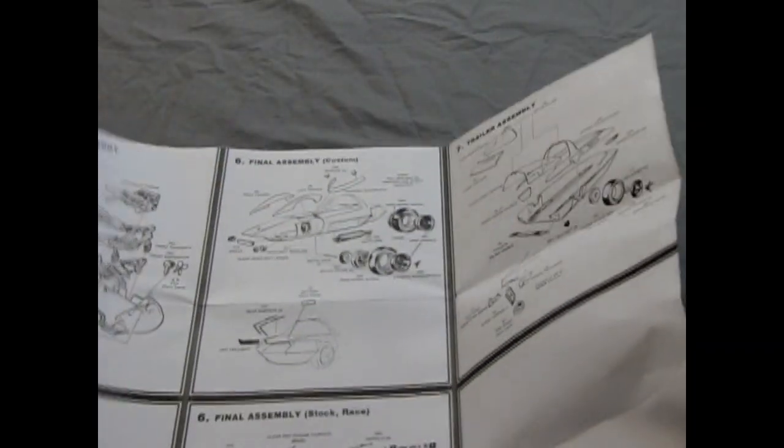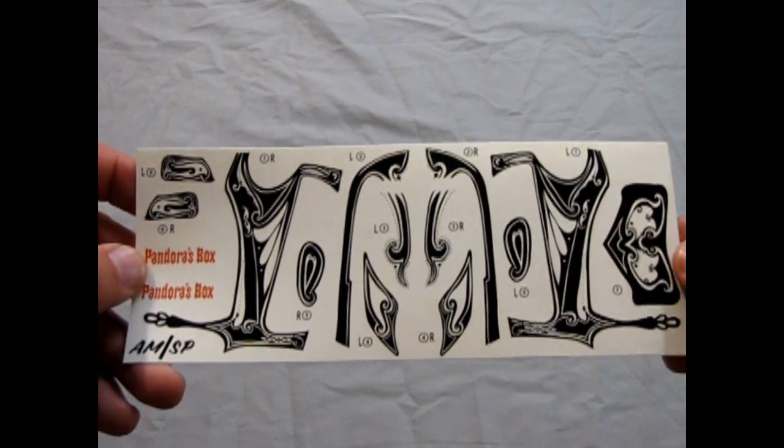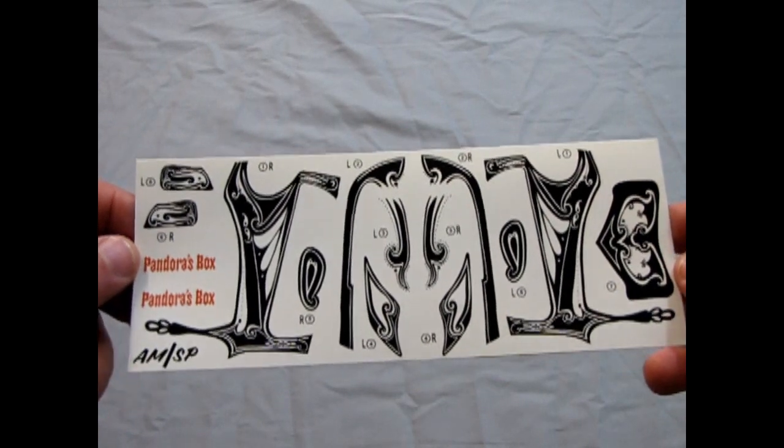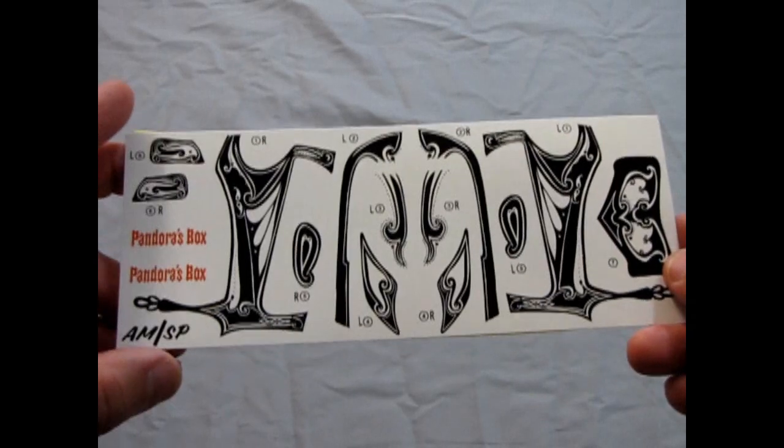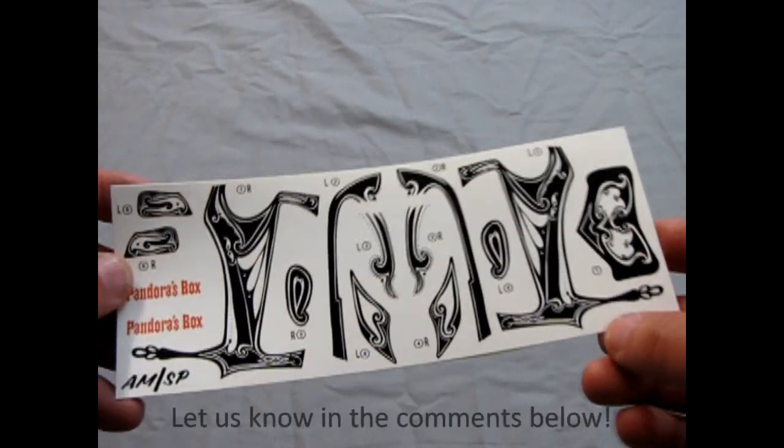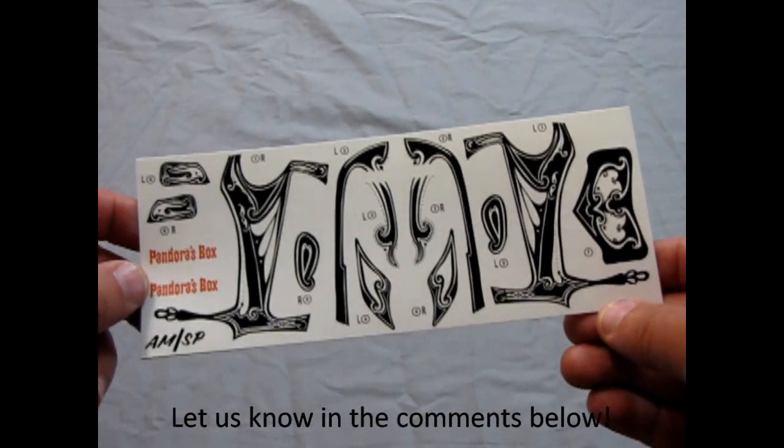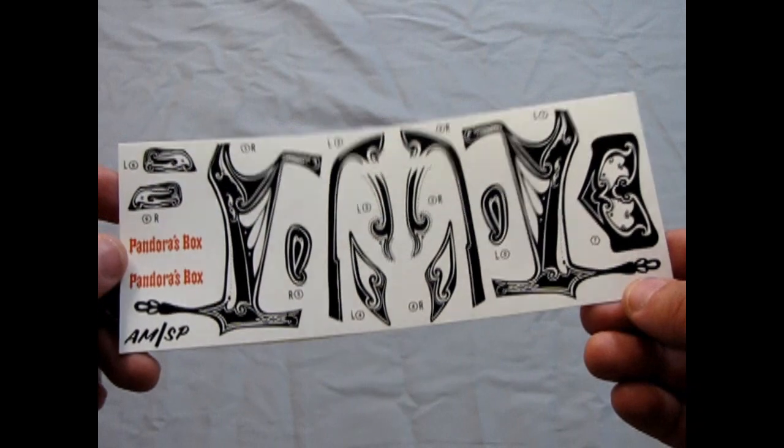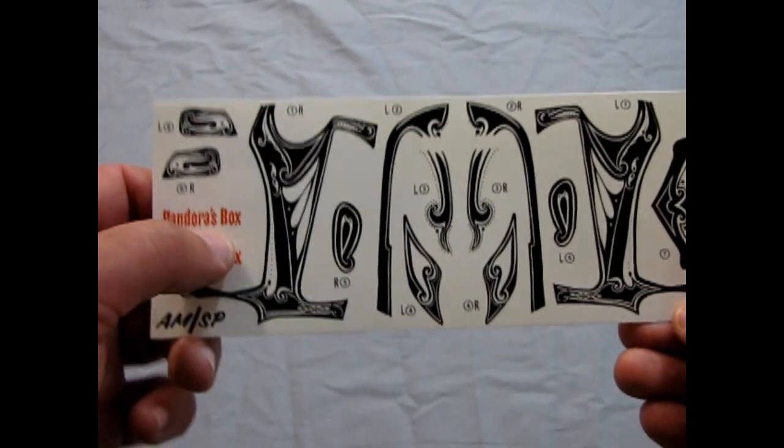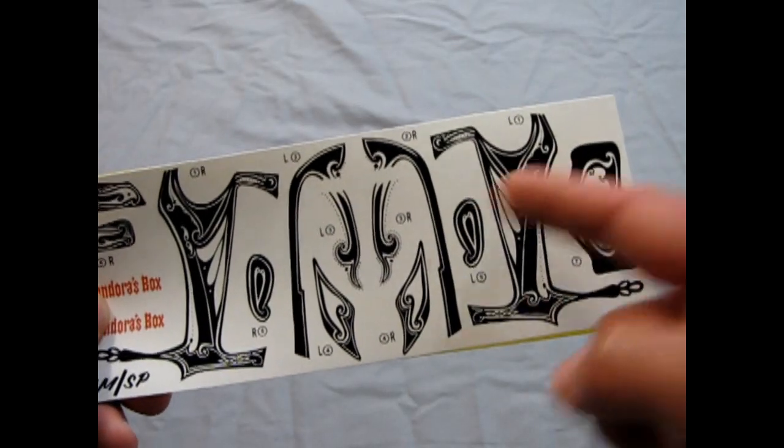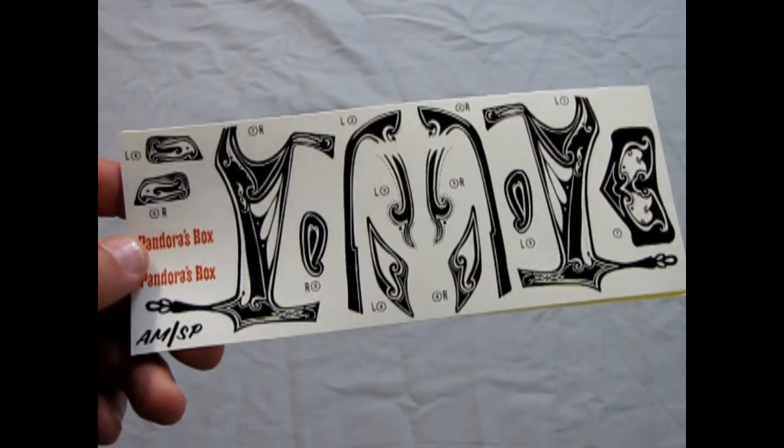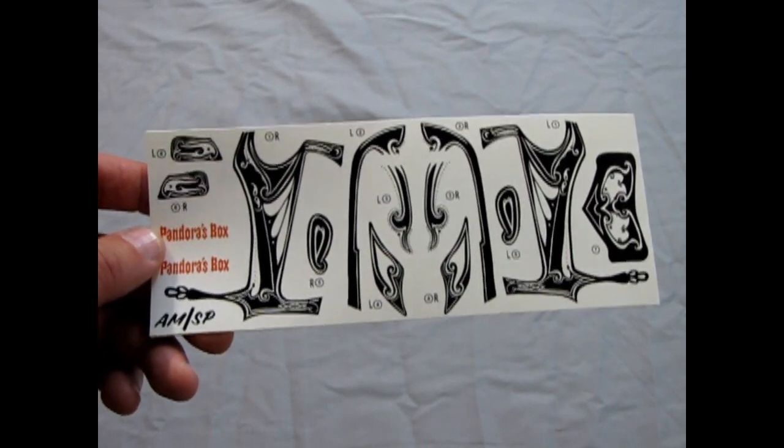Now we're going to look at the decal sheet. And how many of you people have actually built this model and used this decal sheet? Is it decal or is it decal? It depends on where you are and what you want to say. I like to say decal. I'm in Canada. So we have this Pandora's box here, which is interesting, and these really cool pinstripe details. And it is a black decal. So make sure to paint your car any color but black or dark gray, because you'll never see these on there.